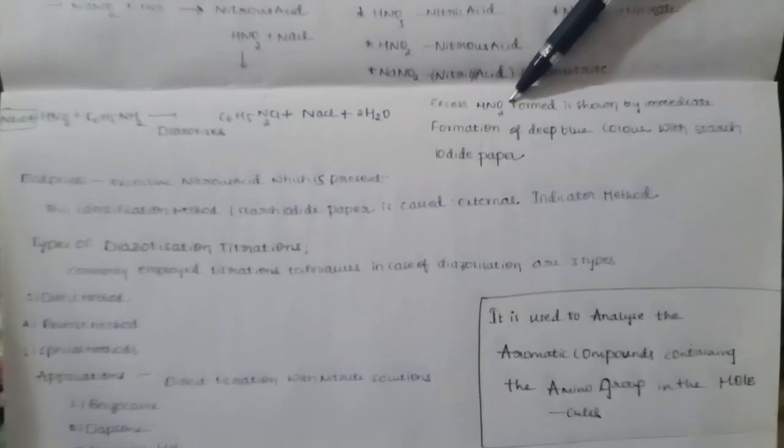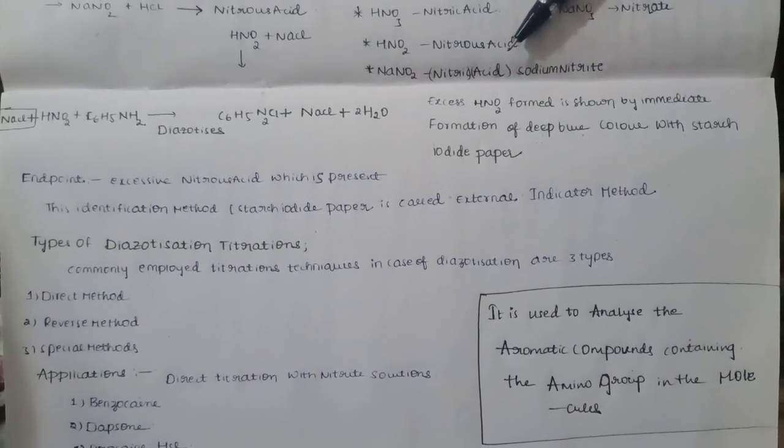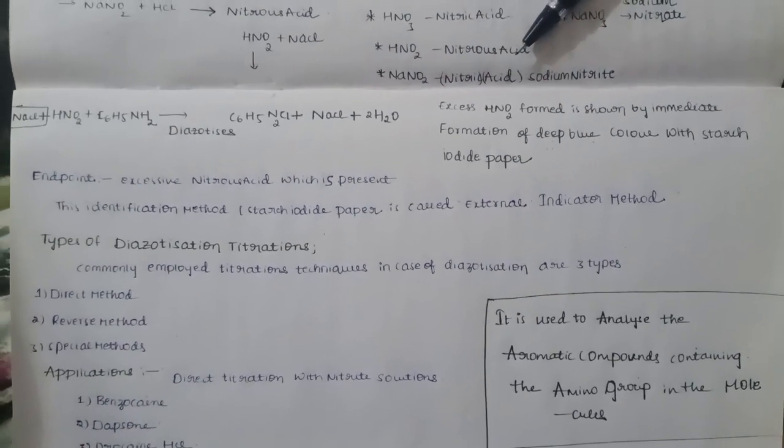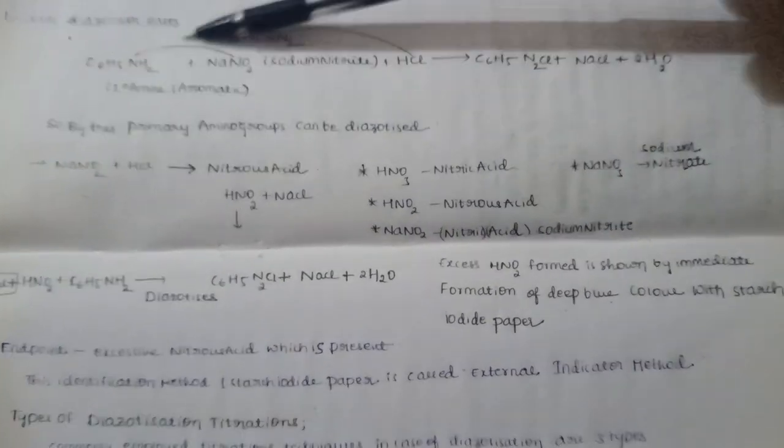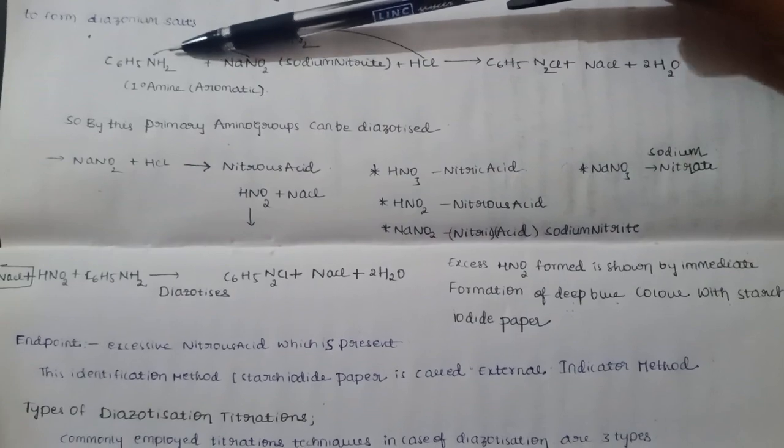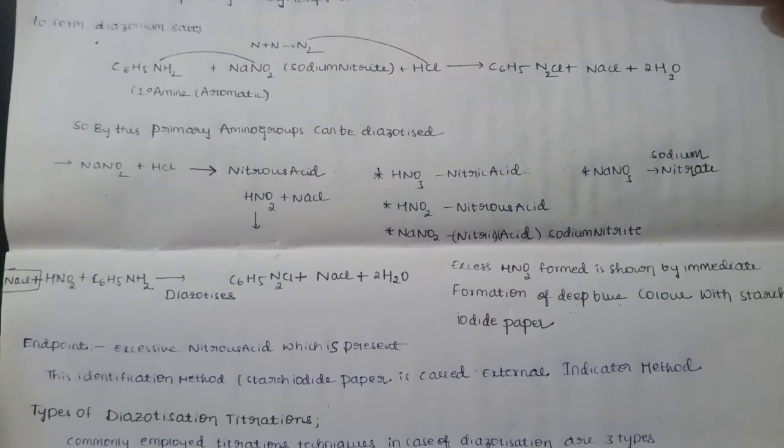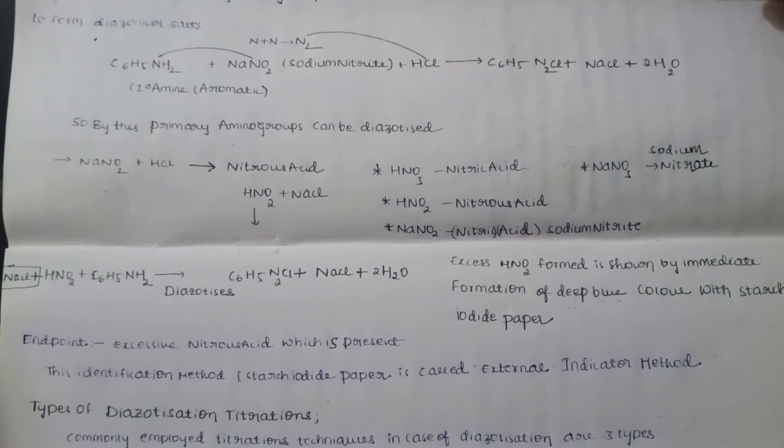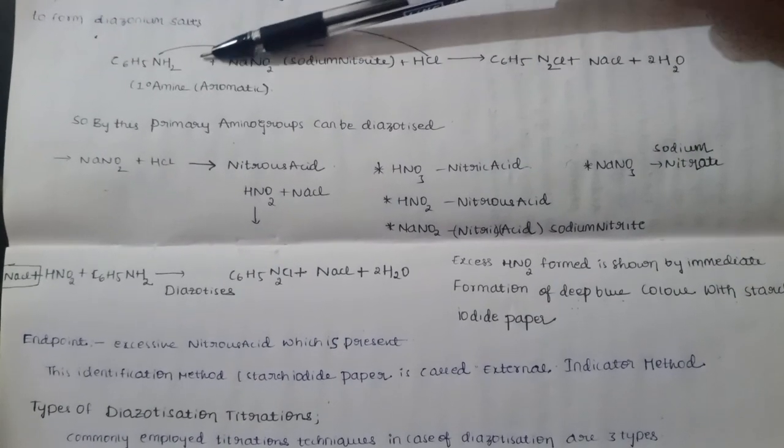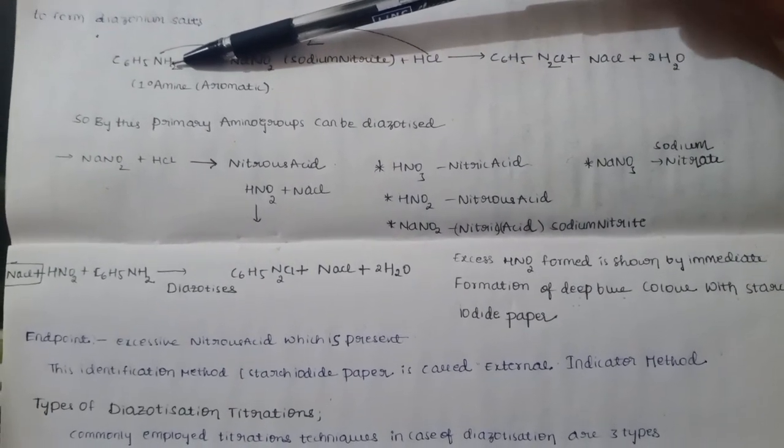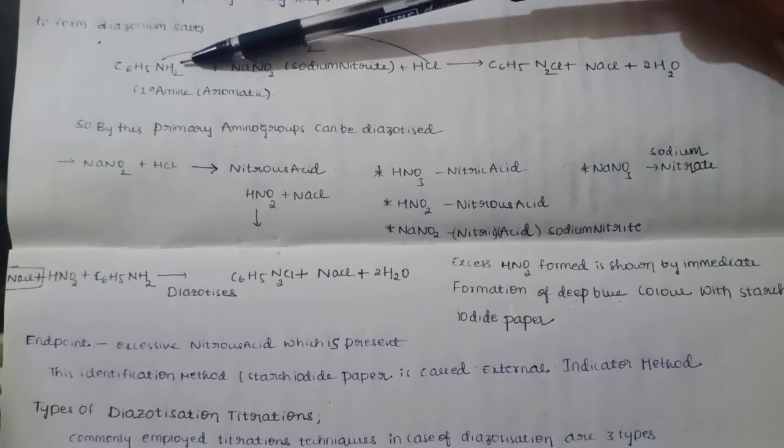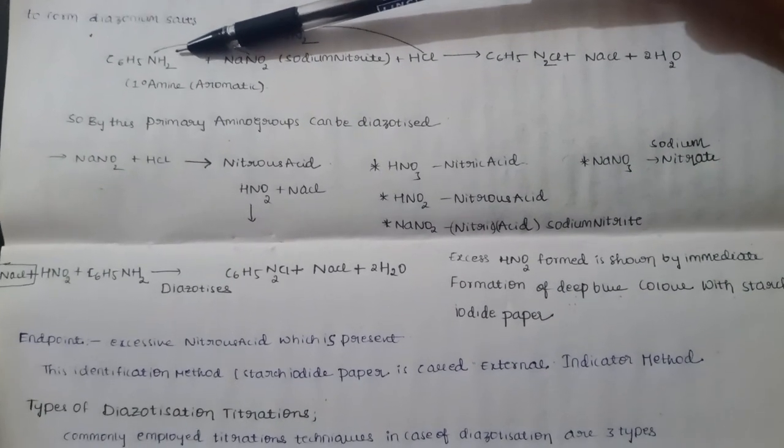Now we have a titration, so how do we know the end point? When we titrate, if 50% reacts with 50%, saturation will form. We need to use excessive nitrous acid to reach saturation.